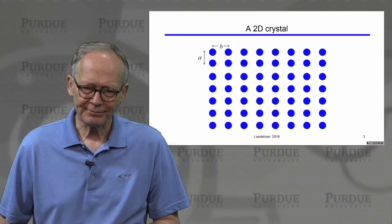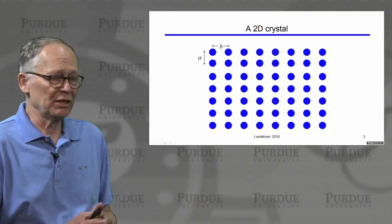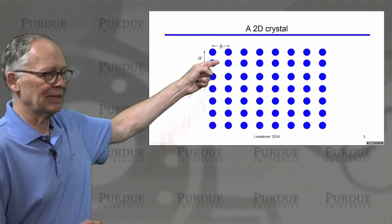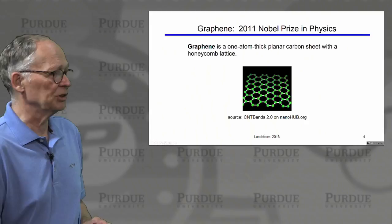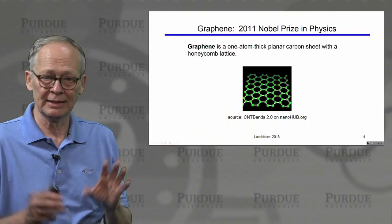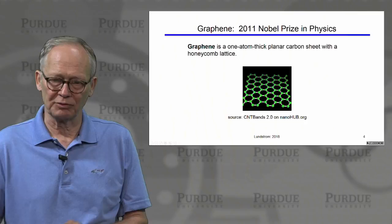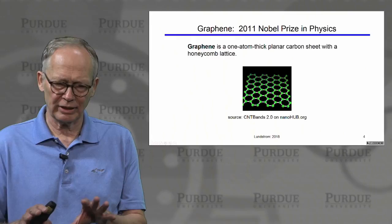It's easiest to illustrate what we're talking about by drawing a crystal in two dimensions. This would be a two-dimensional crystal lattice with a separation A in one direction and a separation B in another. This is not completely artificial — there are two-dimensional electronic materials. The most notable one is graphene, discovered around 2011 and the subject of a Nobel Prize. Graphene is a one-atom-thick planar sheet of carbon in a honeycomb lattice, and researchers are looking to exploit many of its interesting electronic features.